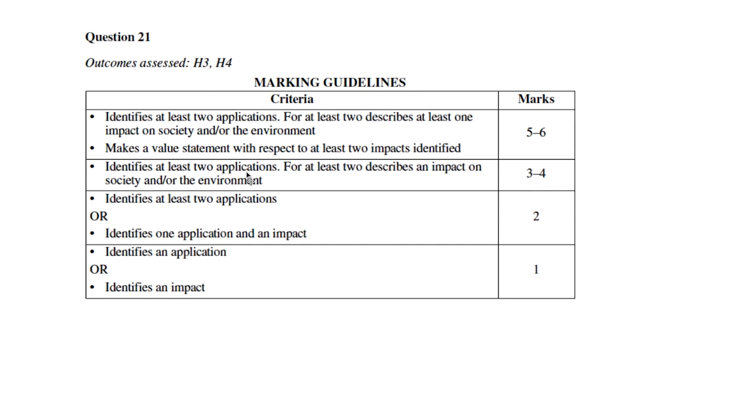Clearly for a three or four you identify two applications and you describe it. In order to get more than two you need to have two applications mentioned. Only two gives them two applications but nothing else, or you do an application and impact. Clearly if you say one thing you get one mark.